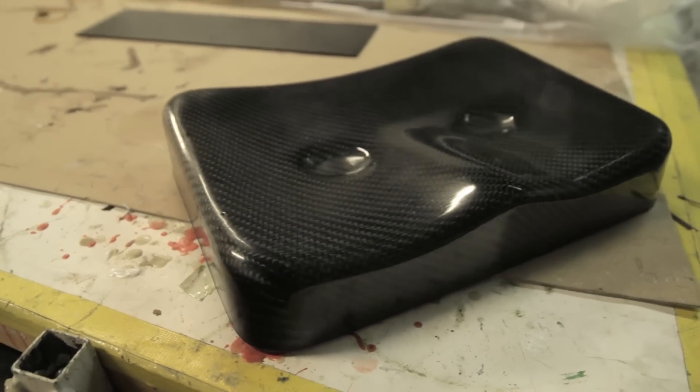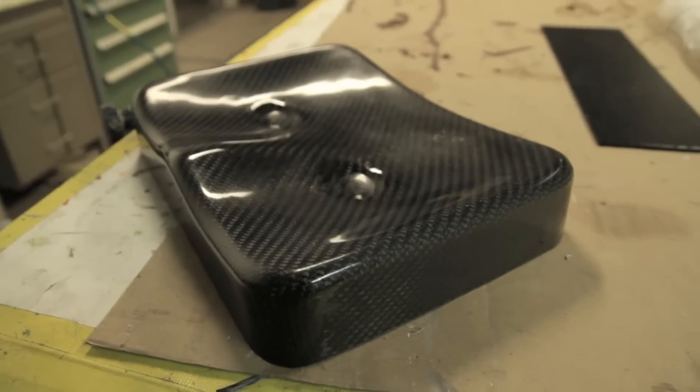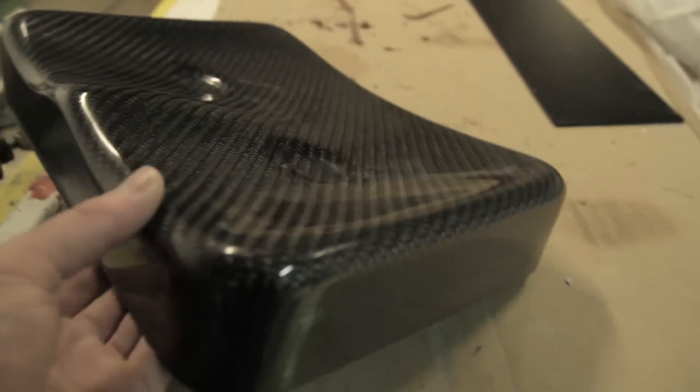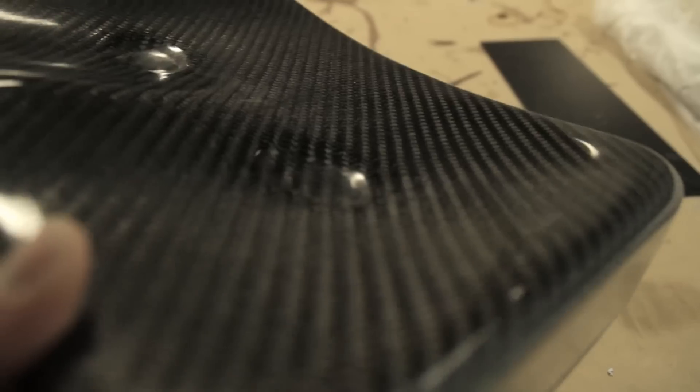But if you're making Formula One cars, space stuff, student cars, remote control parts, this is probably the best way to make strong and light parts. So here's the results. I hope you enjoyed that video.